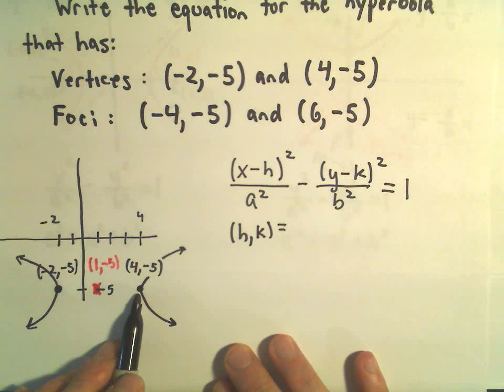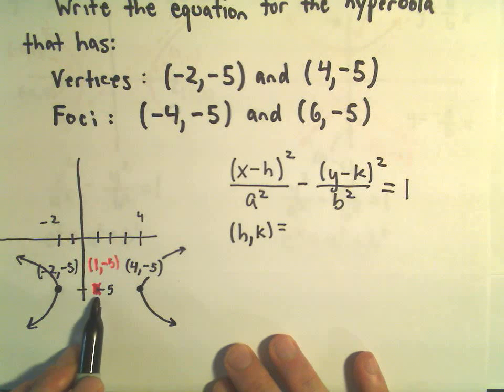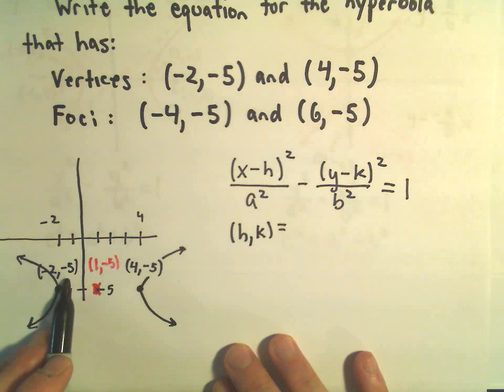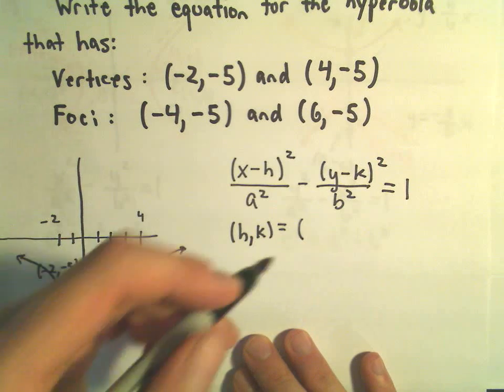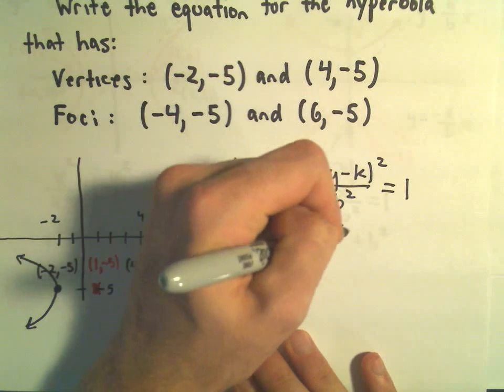So, if we go three units to the right, we would hit (4, -5). If we go three units to the left, we would hit (-2, -5). So, to me, that says my (h, k) point would be (1, -5).